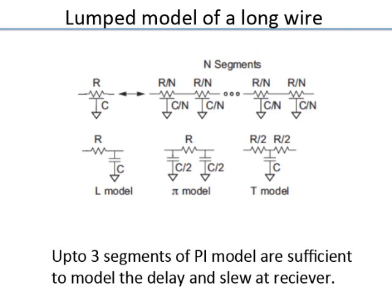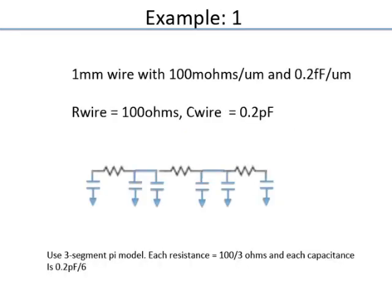Regardless of how many segments you use, the 50%-to-50% delay will always come out to RC/2. What changes with more segments is the rise time and slew rate — the more accurate the waveform shape, the better the estimation of delay for the next stage. Rise time becomes very important for calculating the delay of the subsequent stage.